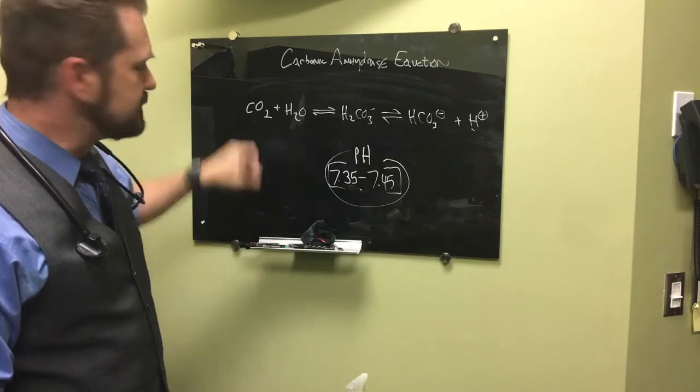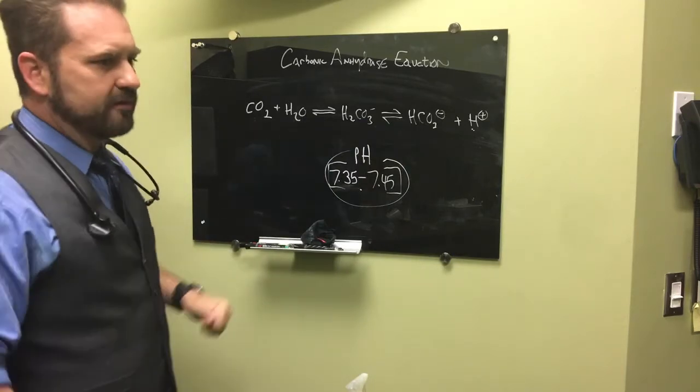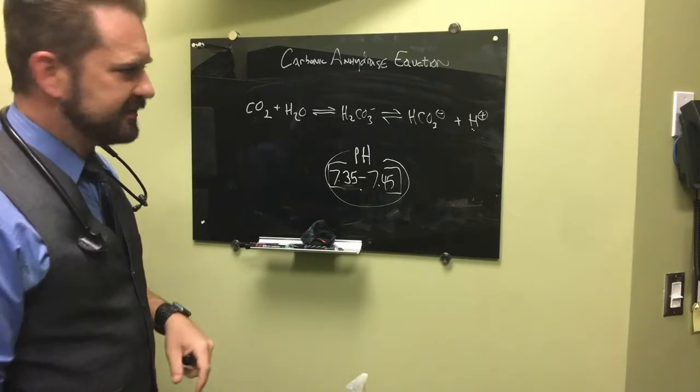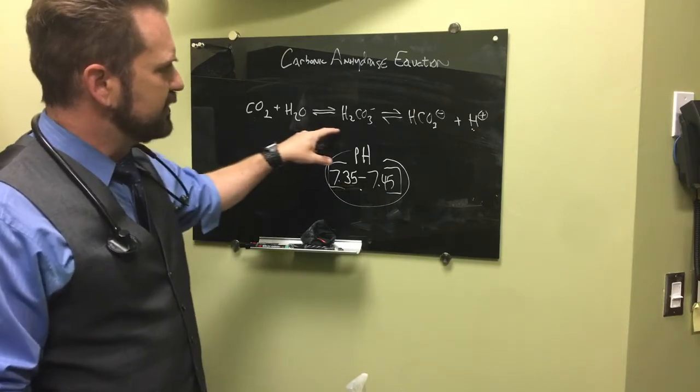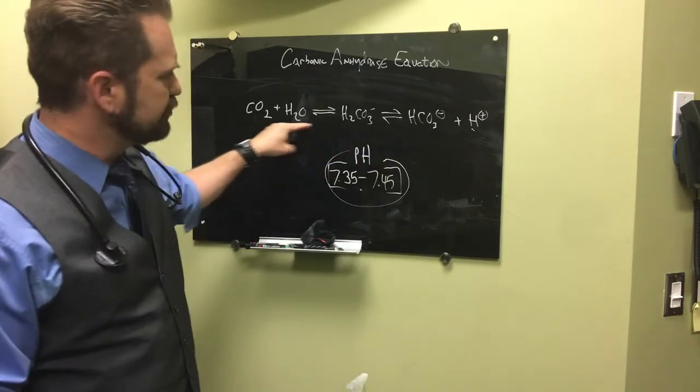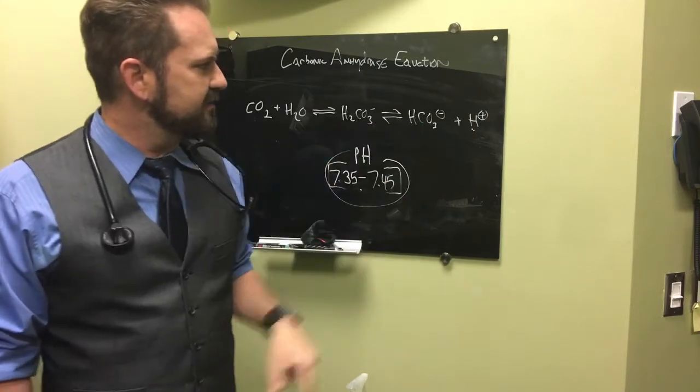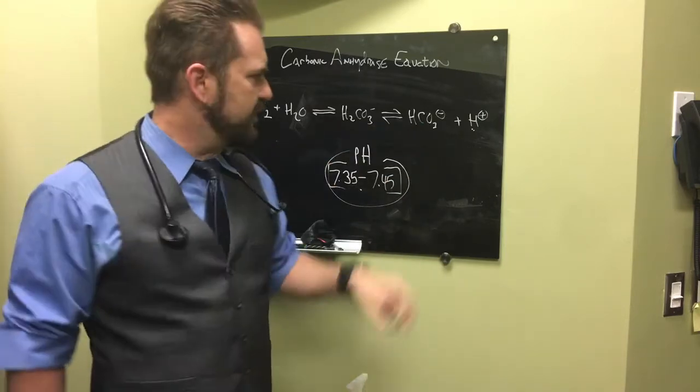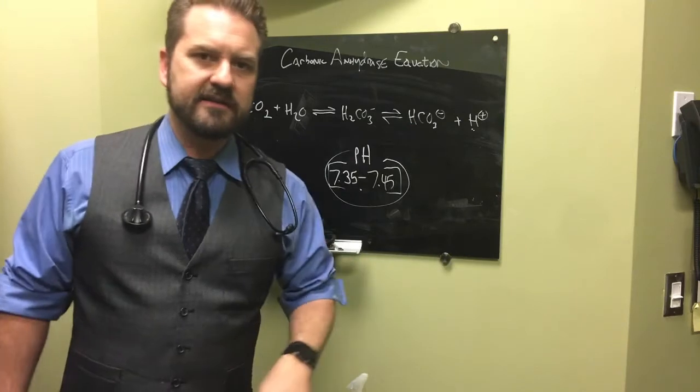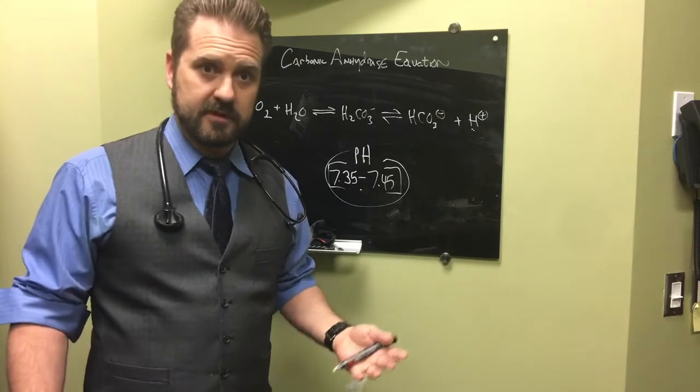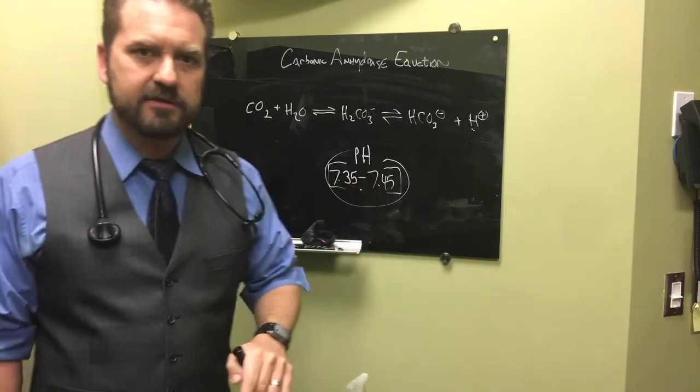If you happen to hold your breath and build up too much carbon dioxide, it will go this way. It will push the reaction this way, and your kidneys and your colon will help regulate the amount of bicarbonate to maintain a neutral pH.